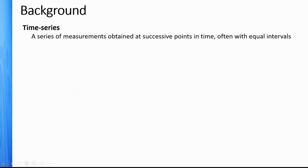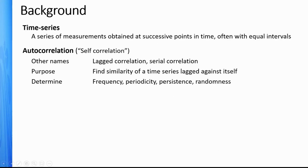Just so everyone is on the same page: when I talk about time series, it's just measurements at consecutive points in time, usually equal intervals apart. Autocorrelation literally means self-correlation — you'll see other terms like lag correlation and serial correlation. The whole purpose is to find similarity of the time series when it's lagged or shifted against itself, to find things like frequency, periodicity, persistence, or randomness within a time series data set.